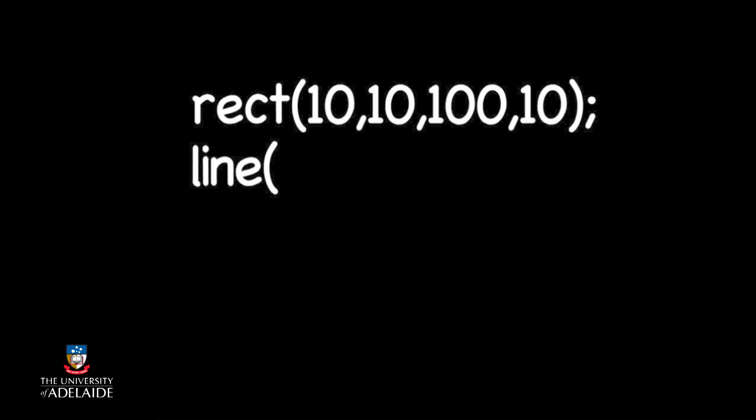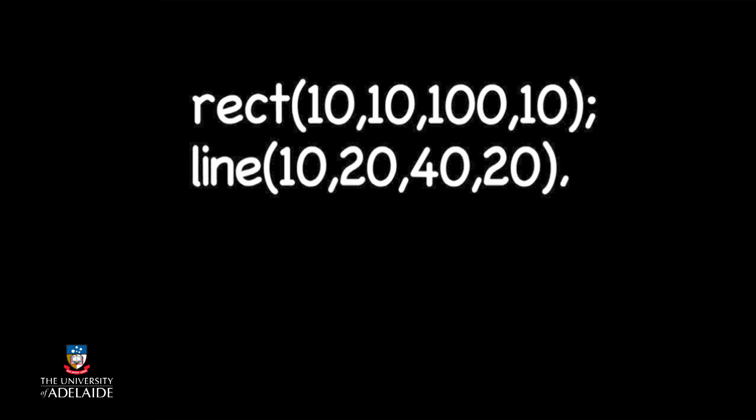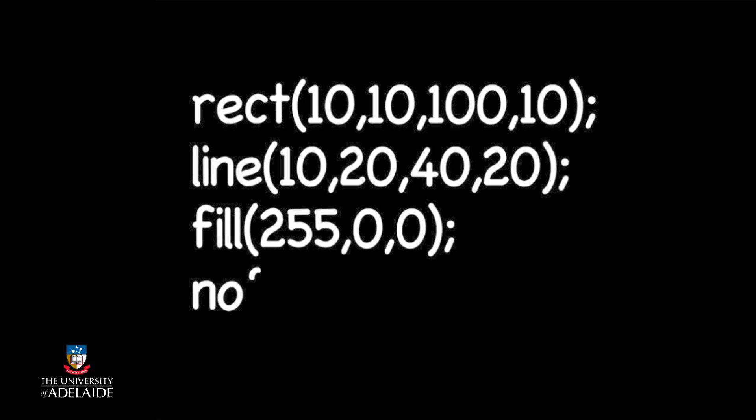In the first few lessons of this course, we saw how we could include specific instructions in our programs to create different shapes, including setting their fill and color attributes. These instructions used existing functions provided by the Processing language.